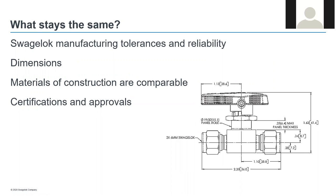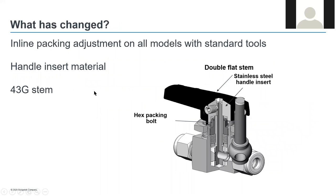On the 40G series, what has stayed the same? The Swagelok manufacturing tolerances and reliability remain the same. The 40G has the same external dimensions as the comparable 40 series models, ensuring a drop-in replacement. Materials are very comparable to the 40 series, with one difference being the packing material, which improves performance and temperature range. The 40G possesses the same certifications and approvals as the 40 series. What has changed: inline packing adjustments can now be made with common tools; the handle insert changed from brass to stainless steel, improving corrosion resistance and durability; and the stem changed to a double flat design, improving handle connection durability and ensuring proper field assembly.